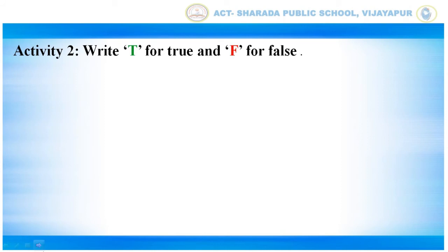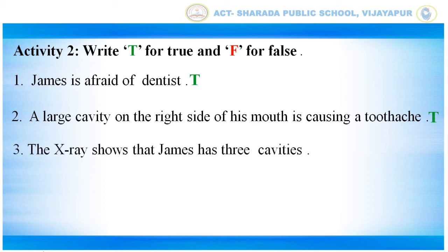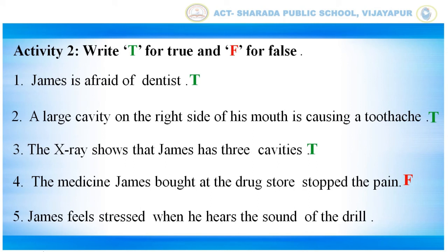Activity 2. Write P for true and Y for false. James is afraid of dentists — true. A large cavity on the right side of his mouth is causing a toothache — true. The x-ray shows that James has three cavities — true. The medicine James bought at the drugstore stopped the pain — false. James feels stressed when he hears the sound of the drill — true.